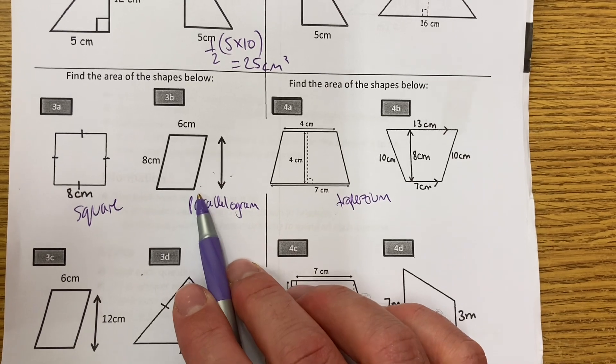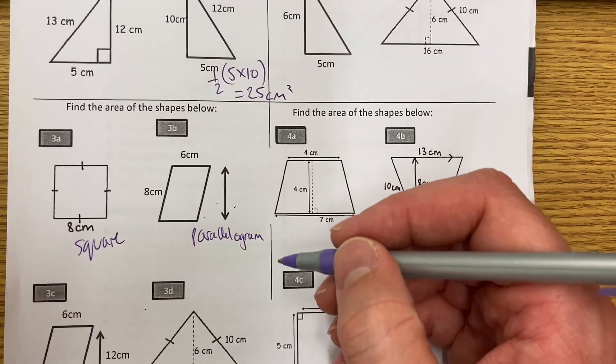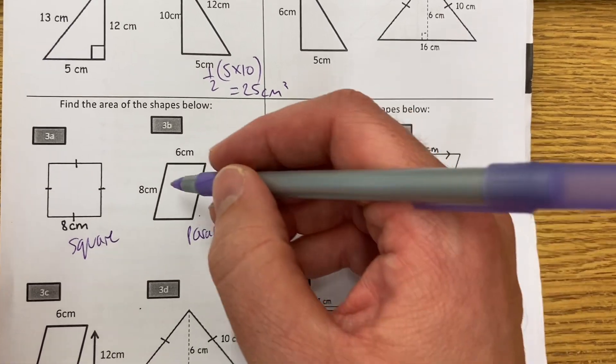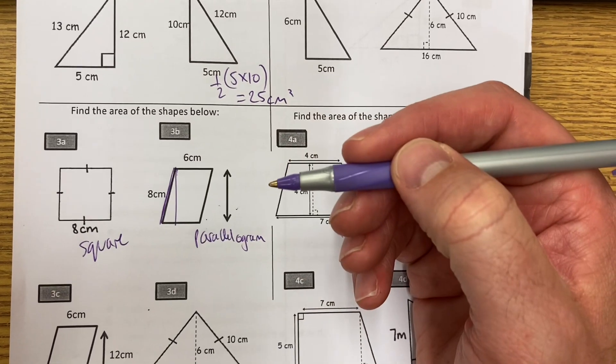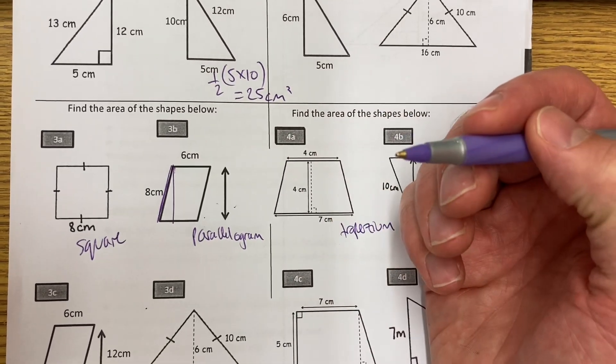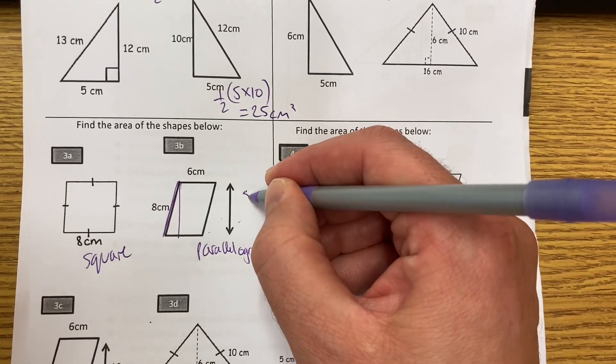This one is just as straightforward as a rectangle. But what I'd need to do is find the perpendicular height. They've given us the slope here, so I can't actually work out what that height is unless I knew it. So let's say that height was, I don't know, 5.